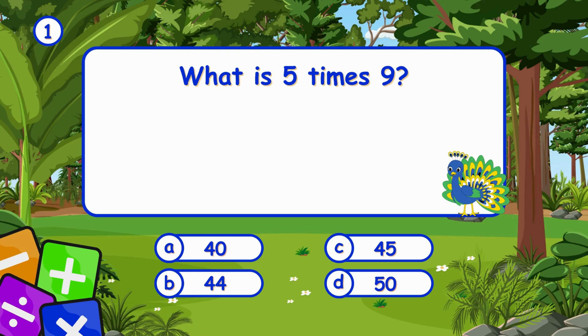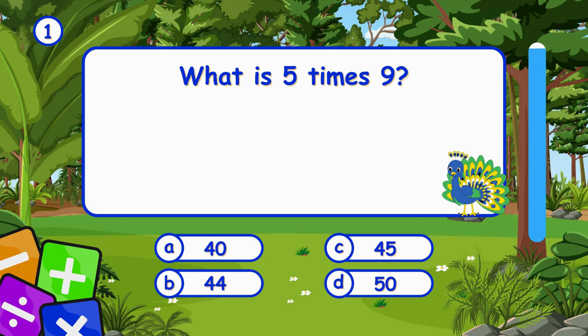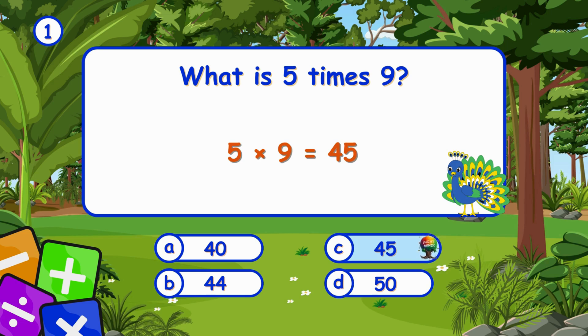What is five times nine? It's C, 45. Five times nine is 45.